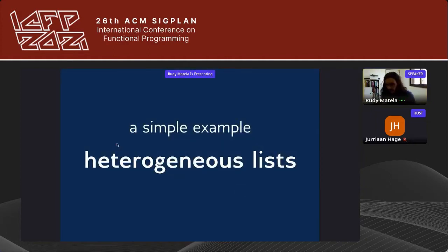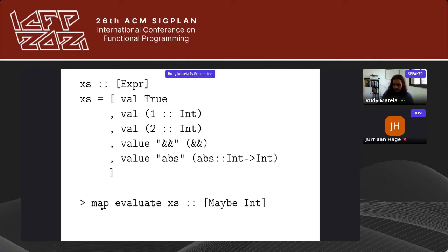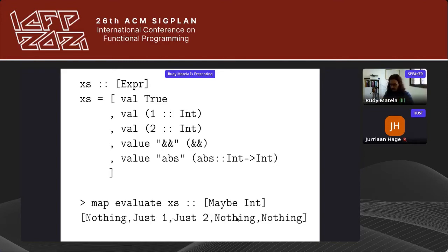Here's a simple example: heterogeneous lists. We can declare a heterogeneous list of values using Express as a list of type [Expr], encoding each value — for example, the Boolean value True, values 1 and 2 of type Int, then the functions and and abs. We can write map (evaluate :: Expr -> Maybe Int) over this list and get Nothing, Just 1, Just 2, Nothing, Nothing — selecting only the values of type Int.